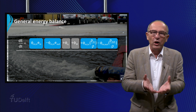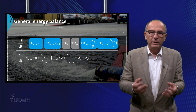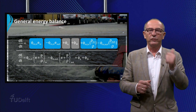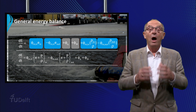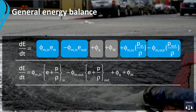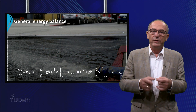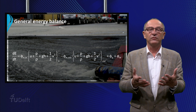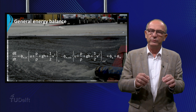Combining all terms dependent on the mass flow rate and substituting the energy concentration E — which consists of potential energy, kinetic energy, and internal energy per unit of mass — the total energy balance can be written out fully. In this vessel example, we assume no heat is lost to the surroundings and no heat effects occur due to chemical reactions. It is important to familiarize yourself with all these terms and their meanings.